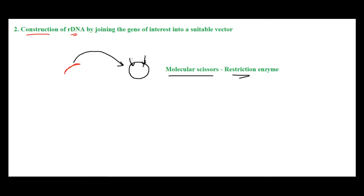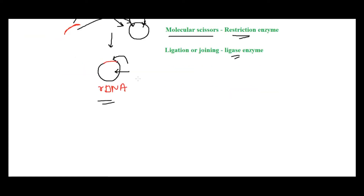There is a second set of enzymes involved called ligase enzymes. What they do is ligate or seal the DNA back. So after treating with restriction enzymes and ligase enzymes, what you get is your recombinant DNA.